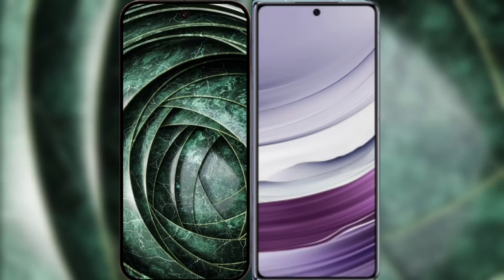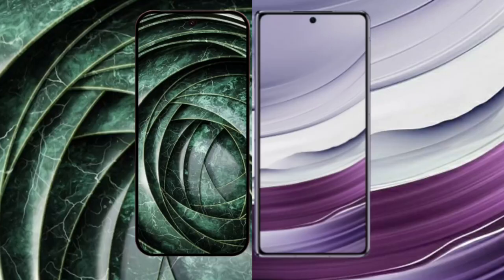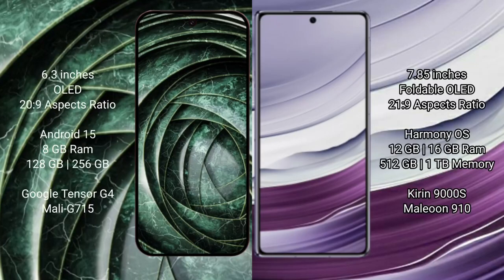I will compare the new Google Pixel 9a with Wahabamate X5. Google Pixel 9a has a 6.3 inches OLED display and success pressure 20s to 9. Wahabamate X5 has a 7.85 inches foldable OLED display and success pressure 21s to 9.